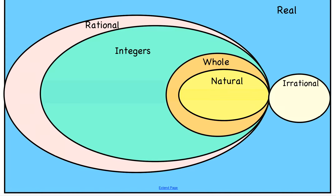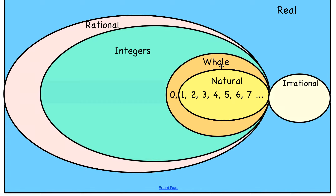To start off, I'd like to explain what each of these subsets of real numbers are. We always start with the natural numbers. When you were a baby and had your first birthday, you learned about the number 1, then 2, and so on. So the natural numbers are our natural counting numbers — the first numbers you learn. Then you get a little older and learn about the concept of 0, and we call those the whole numbers — all of the natural numbers plus 0.